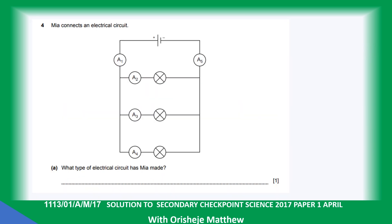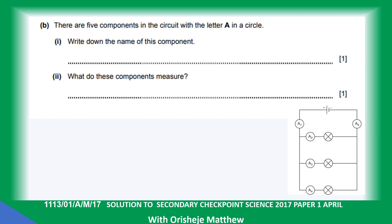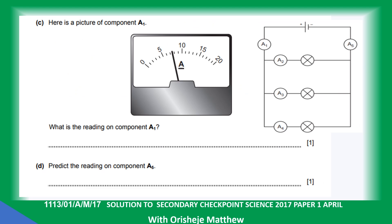Question four: an electric circuit has been made. This is a parallel circuit. There are five different components in the circuit. The component labelled A is an ammeter. An ammeter is used to measure current flowing in a circuit, while a voltmeter is used to measure the potential difference. Looking at the ammeter reading, between five and ten, it reads seven and a half amperes.